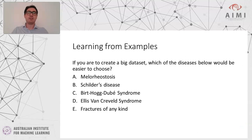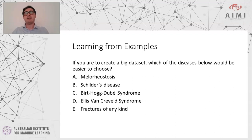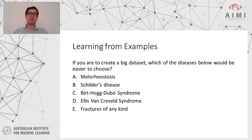Now I want to ask you something else. Let's say you are asked to create a big data set — which of these diseases would you choose? The point of this question is just for you to find out that to create a big data set, it's much, much easier if you're working with a prevalent disease. All of these are very rare diseases, so choosing fractures would be much, much easier.